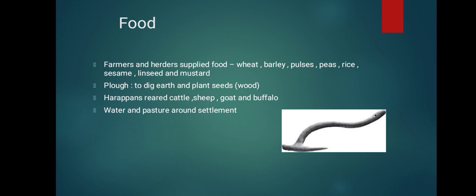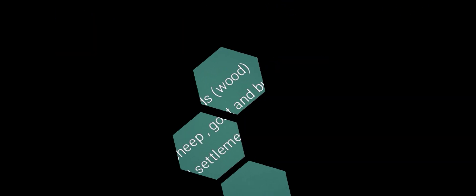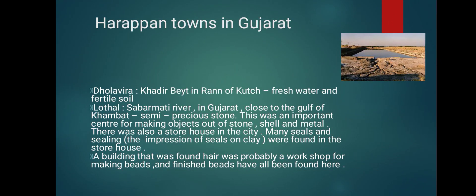Now we will take a closer look at Harappan towns in Gujarat. The city of Dholavira was located on Khadirbet in the Rann of Kutch, where fresh water and fertile soil were found. While some other Harappan cities were divided into two parts, Dholavira was divided into three parts, each surrounded by massive stone walls with entrances through gateways. There was also a large open area in the settlement where public ceremonies could be held.